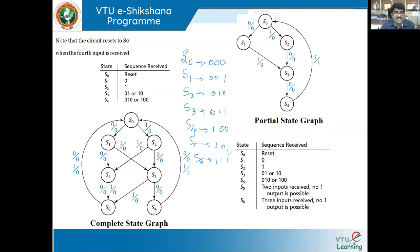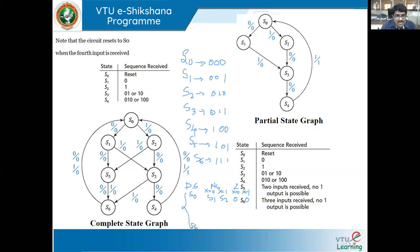You also find the output Z depending on X equals 0 or X equals 1. Since this is a Mealy model, Z depends not only on the present state but also on the present input. The only condition where Z becomes 1 is when in state S4 and X equals 1; in all other conditions Z is 0. From S0 to S6 you just follow the transitions defined in the state graph.